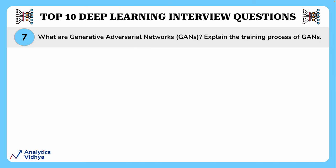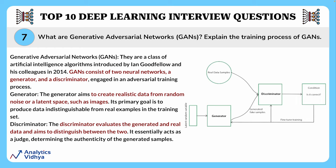This question inquires about GANs and their training process. GANs, or Generative Adversarial Networks, are a class of AI algorithms introduced by Ian Goodfellow and his colleagues in 2014. This is a type of AI where two models compete — one generating data and the other trying to distinguish it from real data — leading to increasingly realistic outputs, like two artists pushing each other to create better work. GANs consist of two neural networks: a generator and a discriminator engaged in an adversarial training process. The generator aims to create realistic data from random noise, while the discriminator evaluates generated and real data to distinguish between the two.